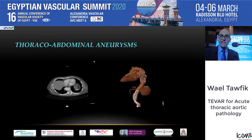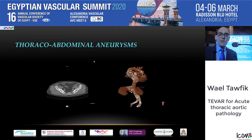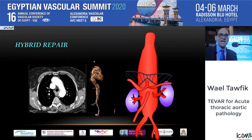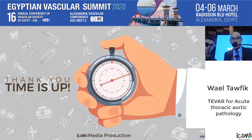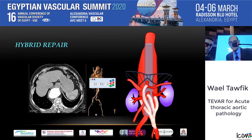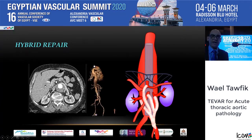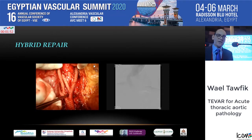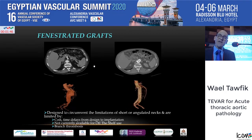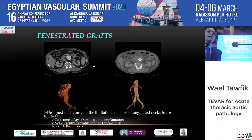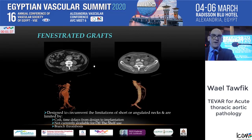Ruptured thoraco-abdominal aneurysms are less common than abdominal aortic aneurysms, but they are challenging because emergency settings may require a hybrid repair — debranching the visceral vessels and then placing the stent — which is quite demanding in the presence of rupture. Fenestrated grafts are generally not a good option in emergencies due to limited shelf availability.